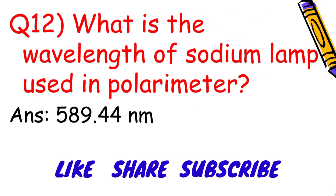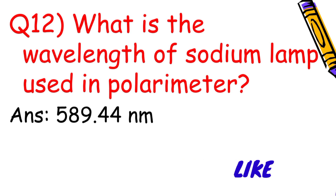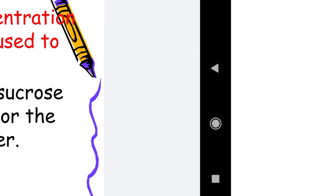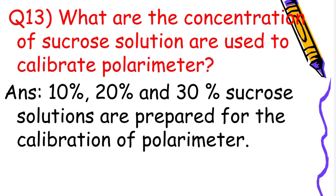What is the wavelength of the sodium lamp used in a polarimeter? The answer is 589.44 nm. What concentrations of sucrose solution are used to calibrate a polarimeter? 10%, 20%, and 30% sucrose solutions are prepared for the calibration of a polarimeter.